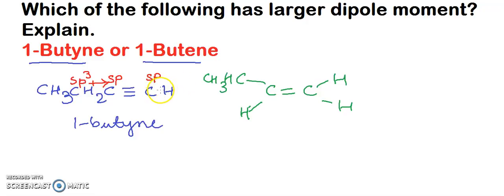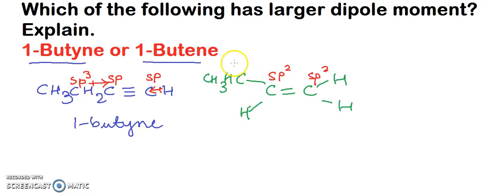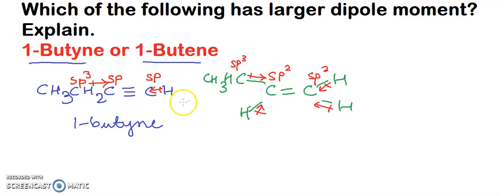From the hydrogen in 1-butyne, you have the dipole moment direction like this. In 1-butene, you have SP2 carbon atoms. The dipole moment goes from the SP3 hybridized carbon atom towards the SP2 hybridized carbon atom. From hydrogen towards the carbon atom — here, here, and here also from hydrogen towards the carbon atom. The resultant dipole moment of both 1-butyne and 1-butene is due to the dipole moments of the CH3, CH2C, and CH bonds.